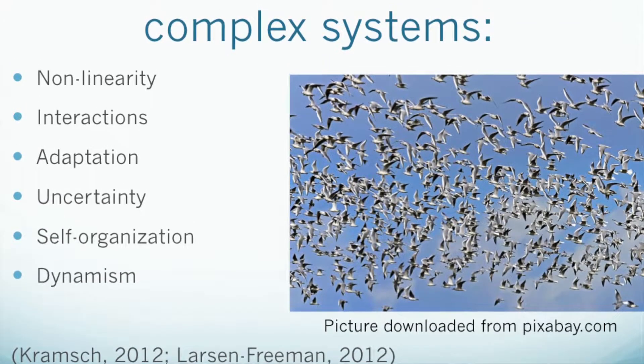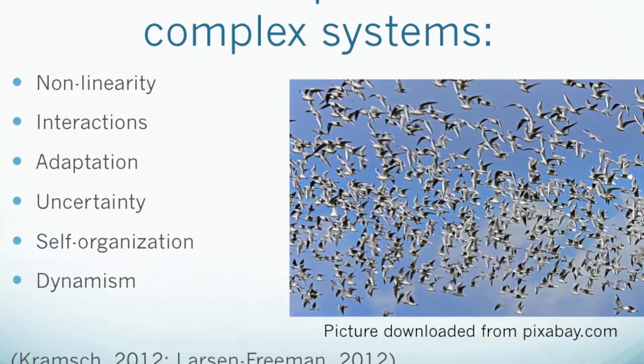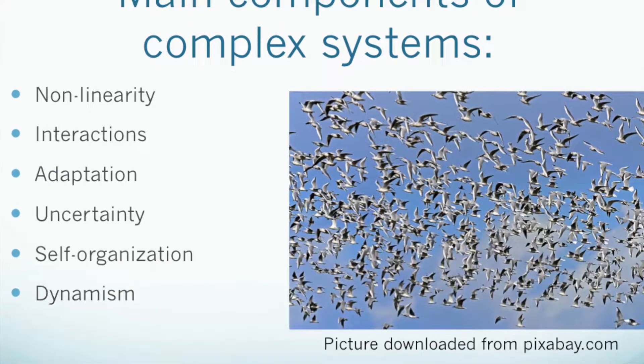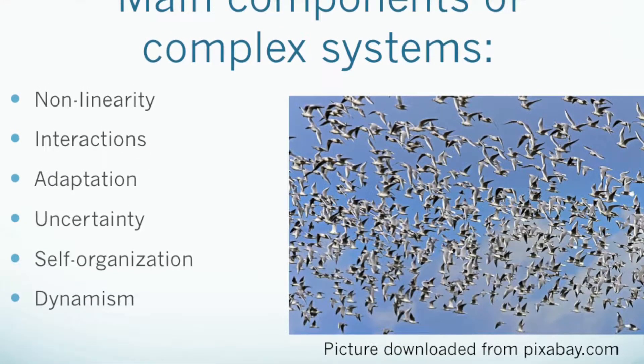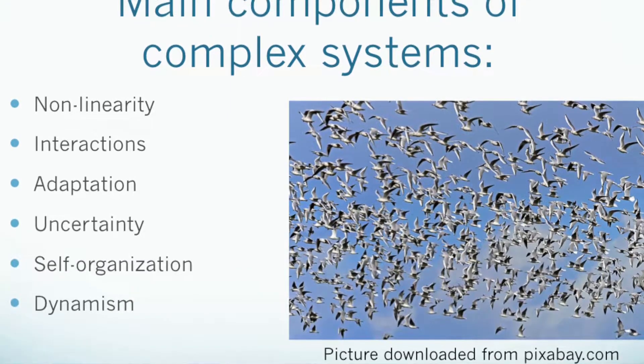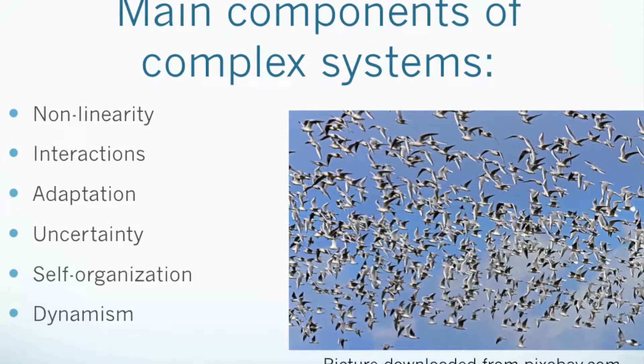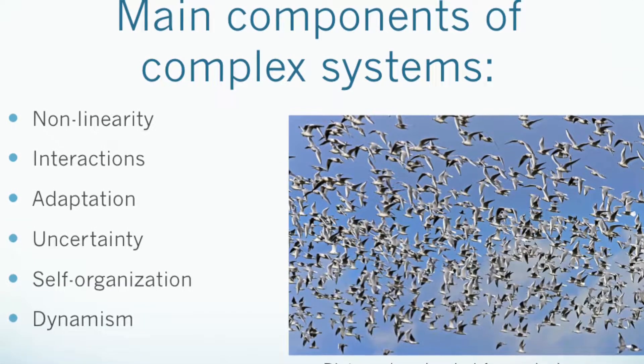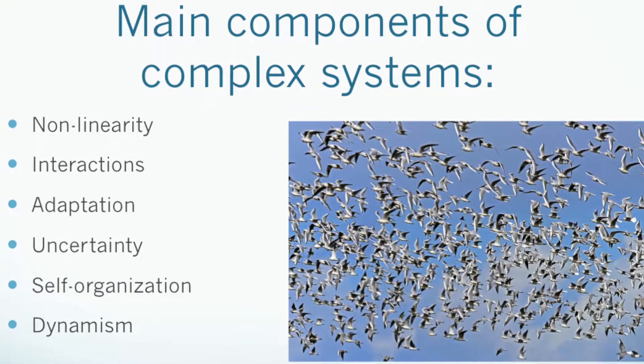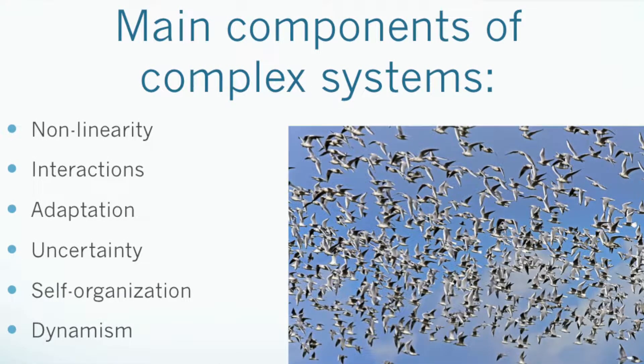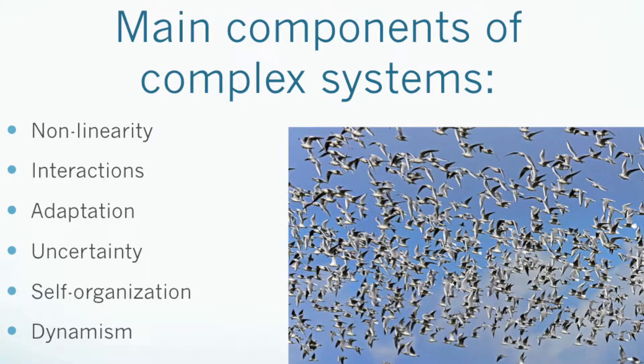The example of the bird flock depicts a vivid representation of a complex system. When they fly together, the birds act like a coherent unit. They are dynamic and self-organized because they don't bump into each other. They adapt to the weather conditions, the air speed, fly in a non-linear direction, and interact among each other as a whole unit.